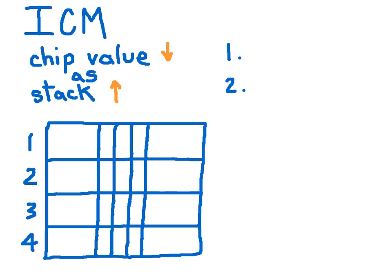So each additional chip you win in a tournament is worth less and less as your stack size is growing. And it only applies to tournaments and sit and goes, not to cash games at all.